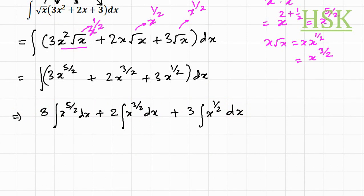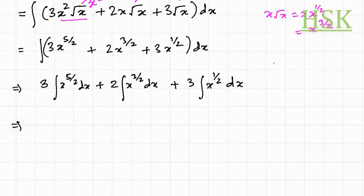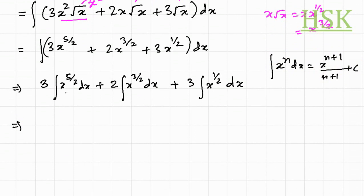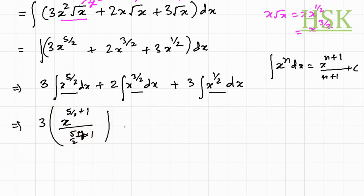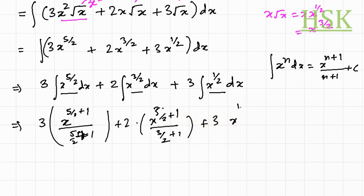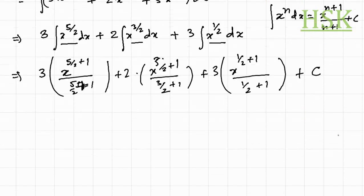Applying the integration formula ∫x^n dx = x^(n+1)/(n+1) + C, each term is solved by this formula. So we get 3 · x^(5/2 + 1)/(5/2 + 1) + 2 · x^(3/2 + 1)/(3/2 + 1) + 3 · x^(1/2 + 1)/(1/2 + 1) + C.